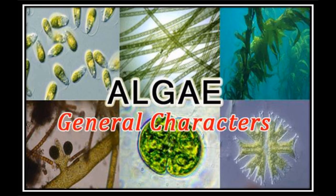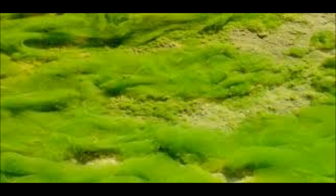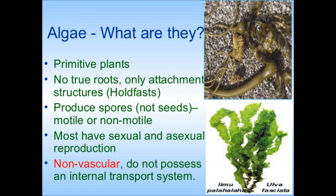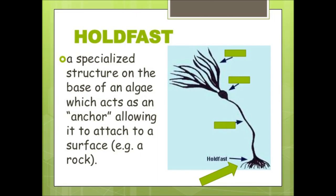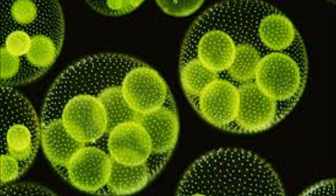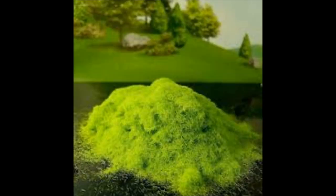Now we will discuss about algae. Algae are primitive plants which are generally autotrophic in nature. They contain chlorophyll pigments, so they prepare their own food by the process of photosynthesis. They are non-vascular plants, so they lack vascular tissues or conducting tissues such as xylem and phloem. Algae do not have roots, so they attach themselves to the substratum by means of holdfasts. They produce motile or non-motile spores which help in reproduction.